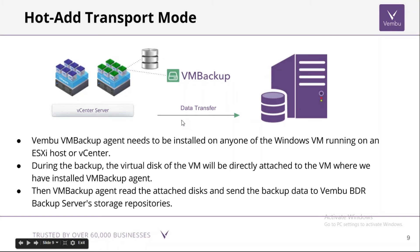In Hot Add transport mode, the VM Backup Agent is installed on one of the VMs on the ESXi host. When a backup request is raised, the virtual disks of the target VMs are directly attached to the VM where the Backup Agent is installed. The agent then reads the attached disk and sends the backup data to the Wambu BDR server's storage repository.